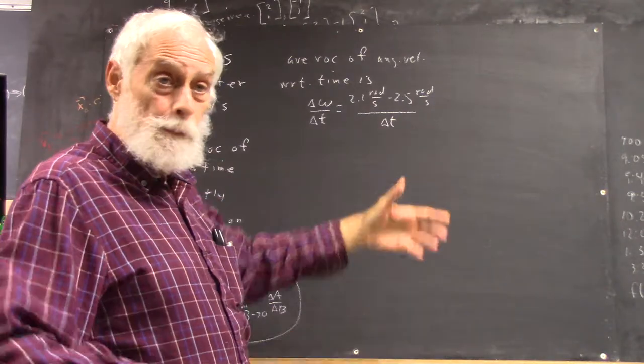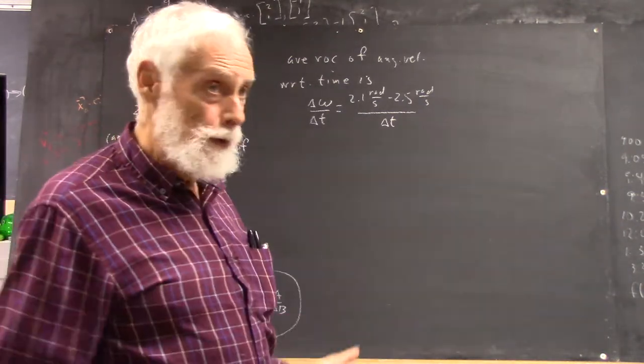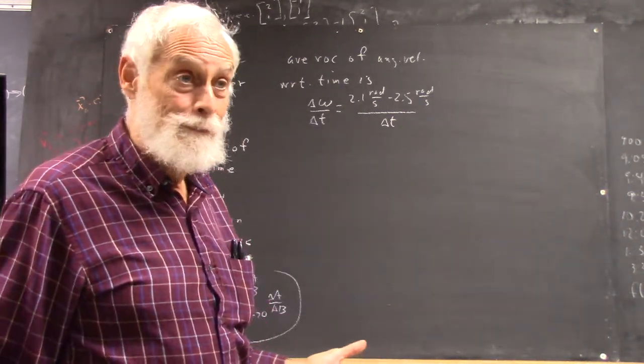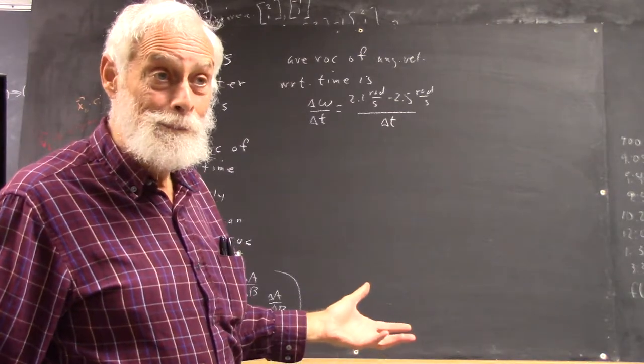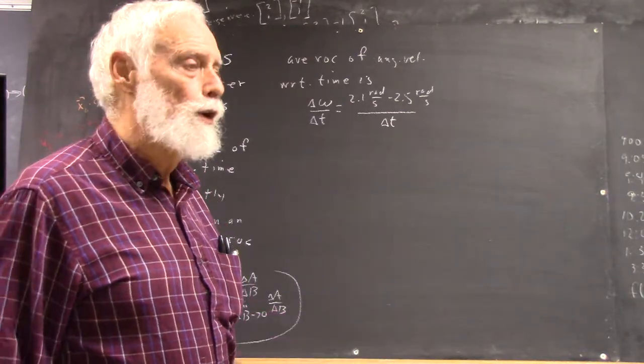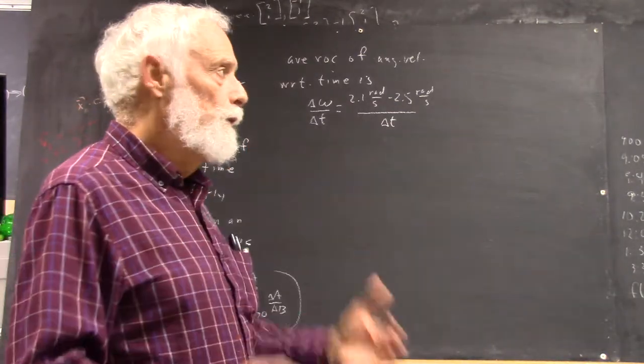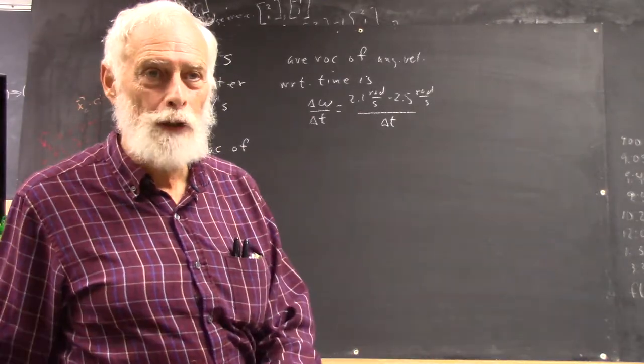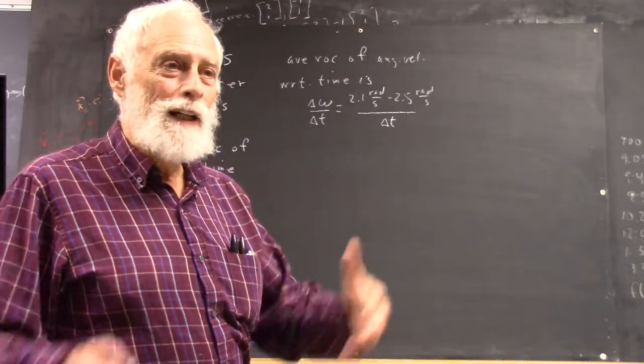You just write it down because you're thinking of formulas rather than thinking about what happens, and you make a mistake. A terrible mistake that hopefully, by carrying through the units and realizing your units didn't work out, you immediately go back and fix.